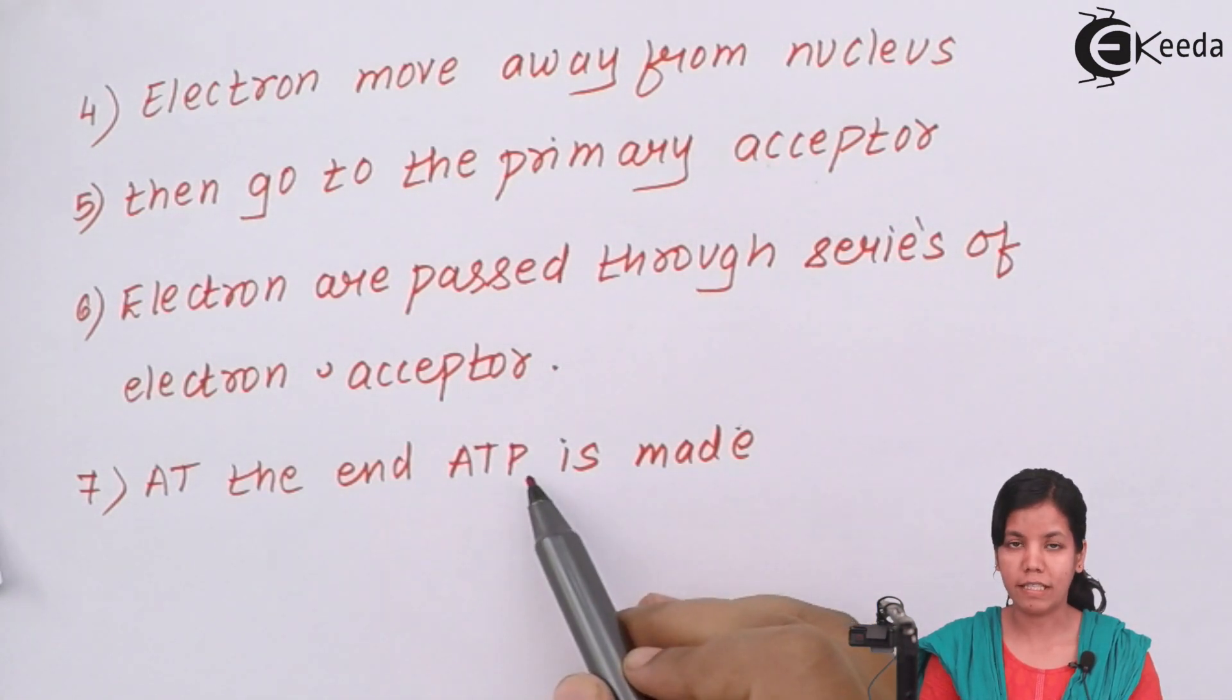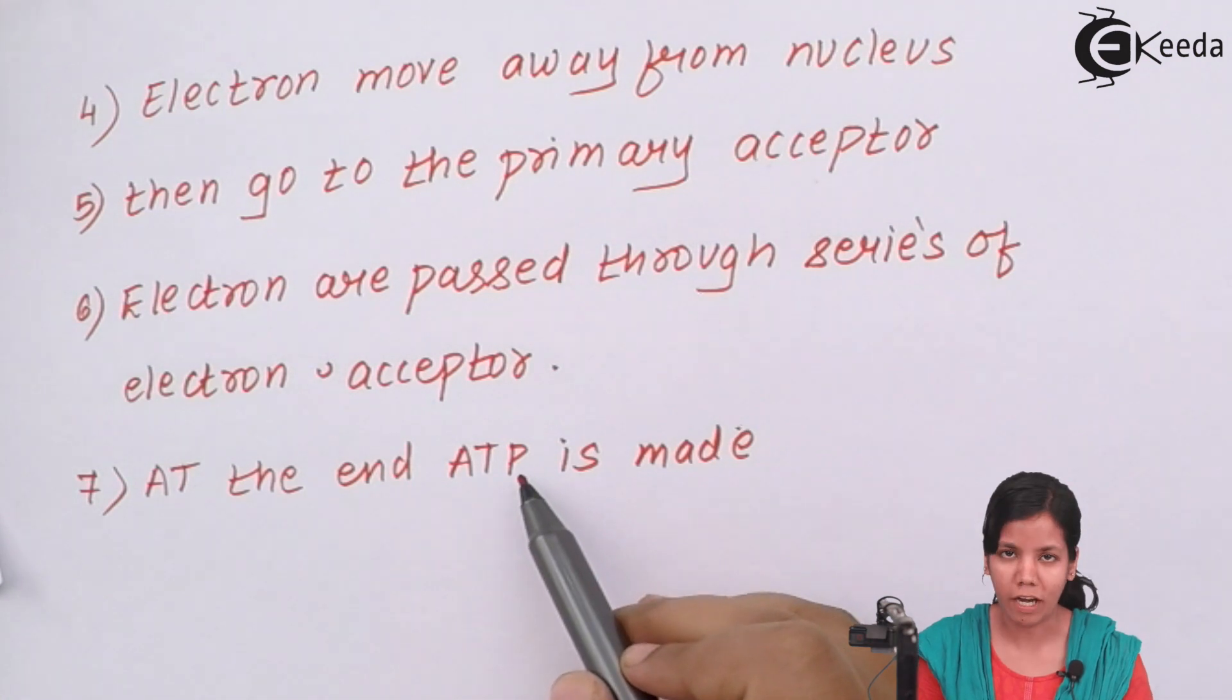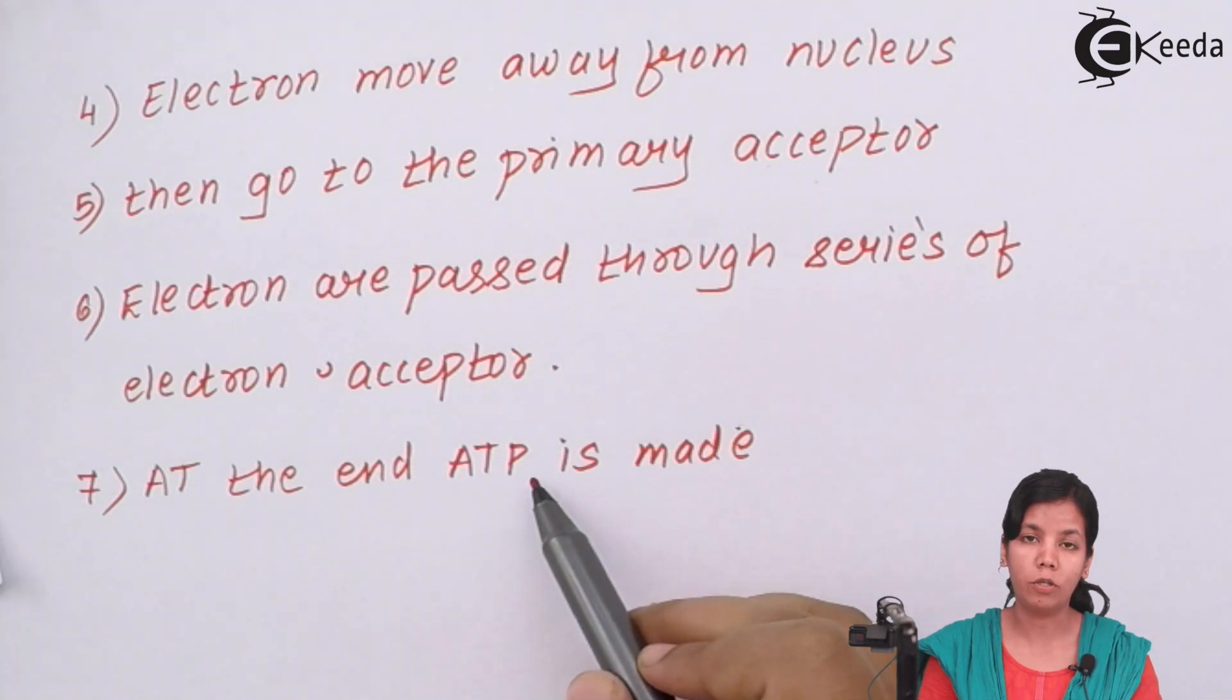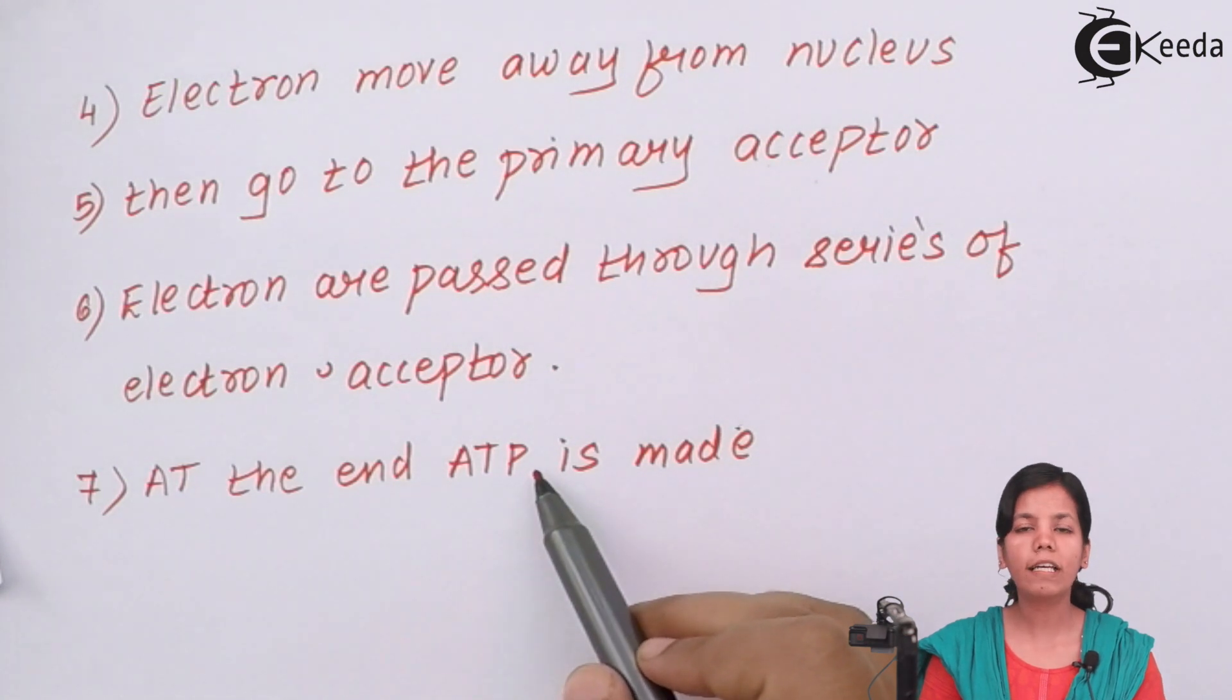At the end of this process, that is, at the end of cyclic photophosphorylation and non-cyclic photophosphorylation, ATP is made which could be used, or probably which is used, in the dark reaction or the C3 cycle or the Calvin cycle.